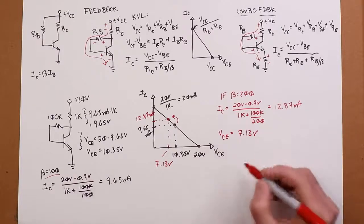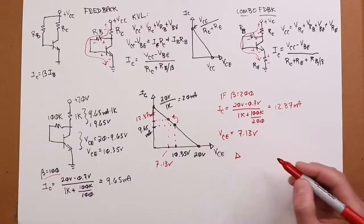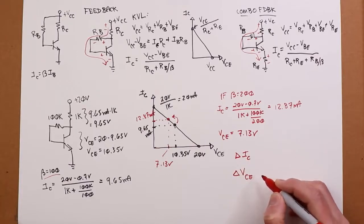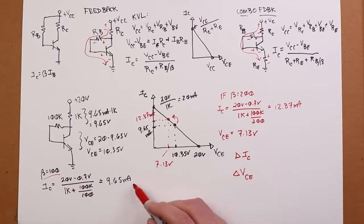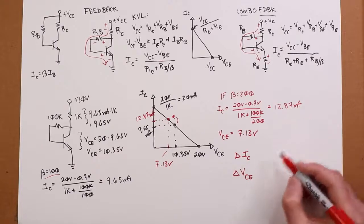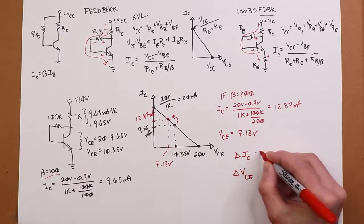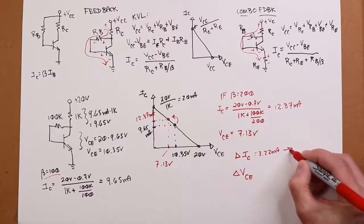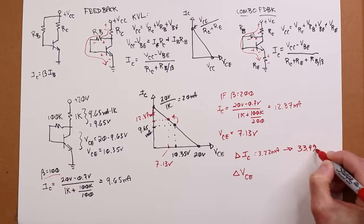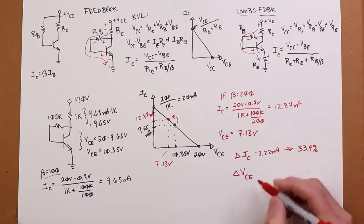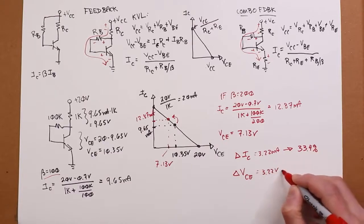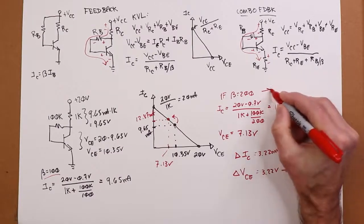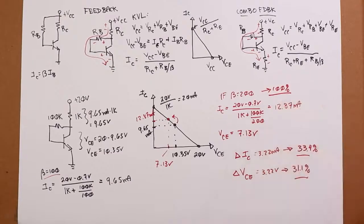All right? If we figure out what the changes in IC work out to be, and the changes in VCE. And what are we looking at? Well, there's a change of going from 9.65 to 12.87. That's about 3.22 mils. And if we compare that to where we started, the 9.65, that turns out to be 33.4% of the change. And we see a similar thing with VCE. All right? We get 3.22 volt change, which compared to our starting point at 10.35 is a 31.1% change versus a 100% change, a doubling in the beta.